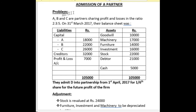Look at the sum. A, B and C are partners sharing profit and losses in the ratio 2:3:5. On 31st March 2017, their balance sheet was as follows. There are 3 partners A, B and C who share their profit and losses in the ratio 2:3:5. As per 31st March 2017, their capital balances stood as 18,000, 22,000 and 26,000.